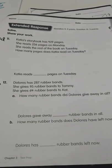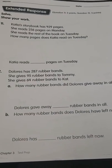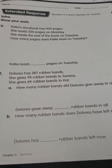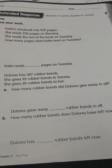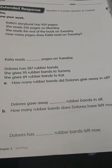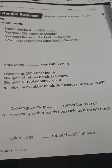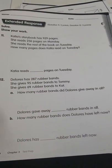Number 12. Dolores has 287 rubber bands. She gives 95 rubber bands to Tommy. She gives 64 rubber bands to Kat. How many rubber bands does Dolores give away in all? This is going to be a two-step problem. That's why they have an A and a B.